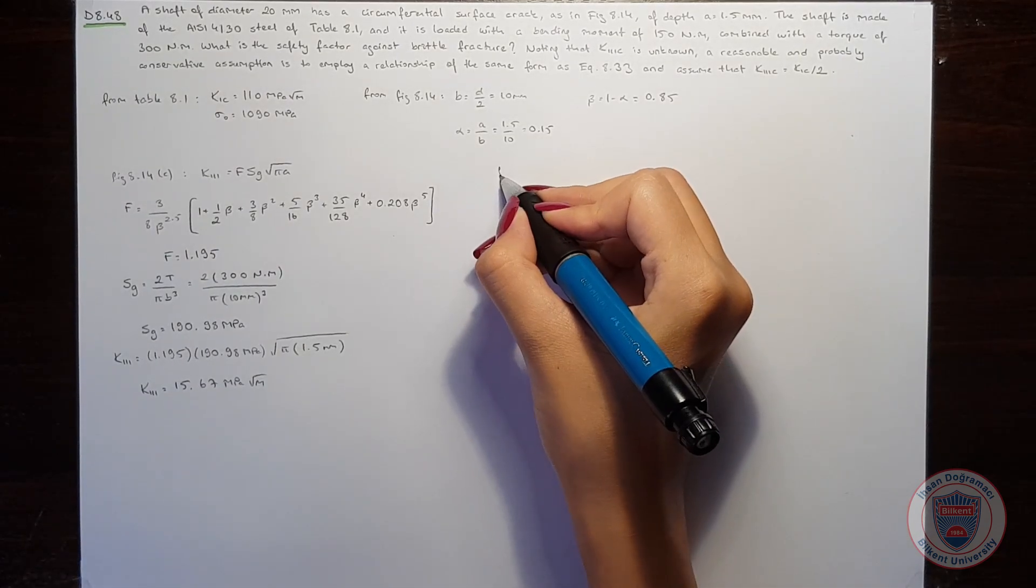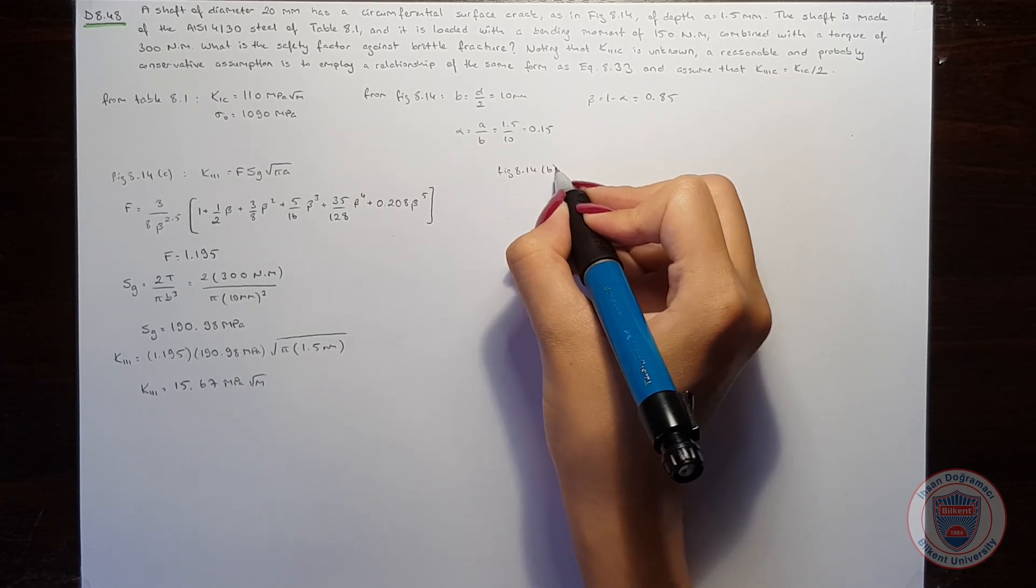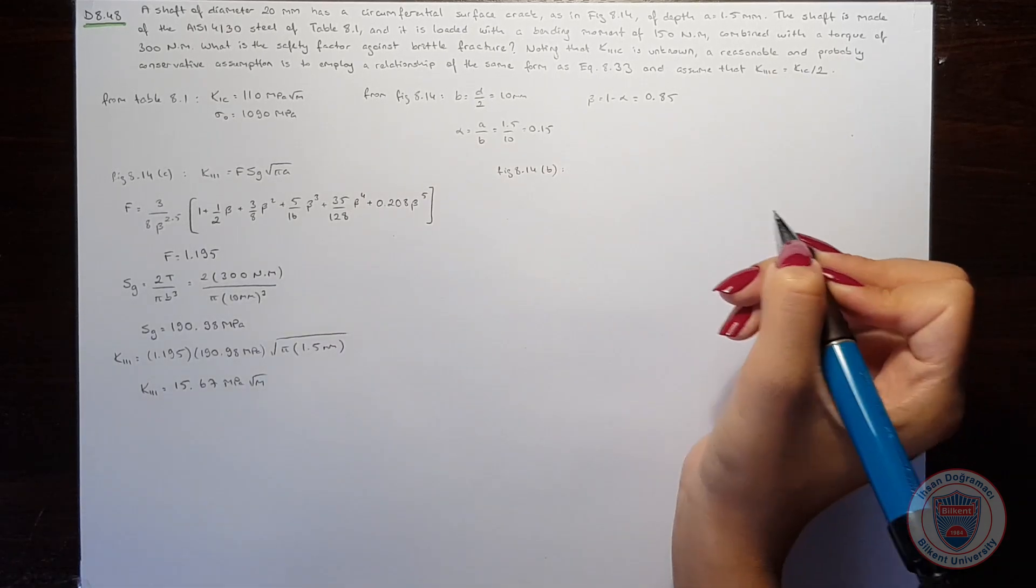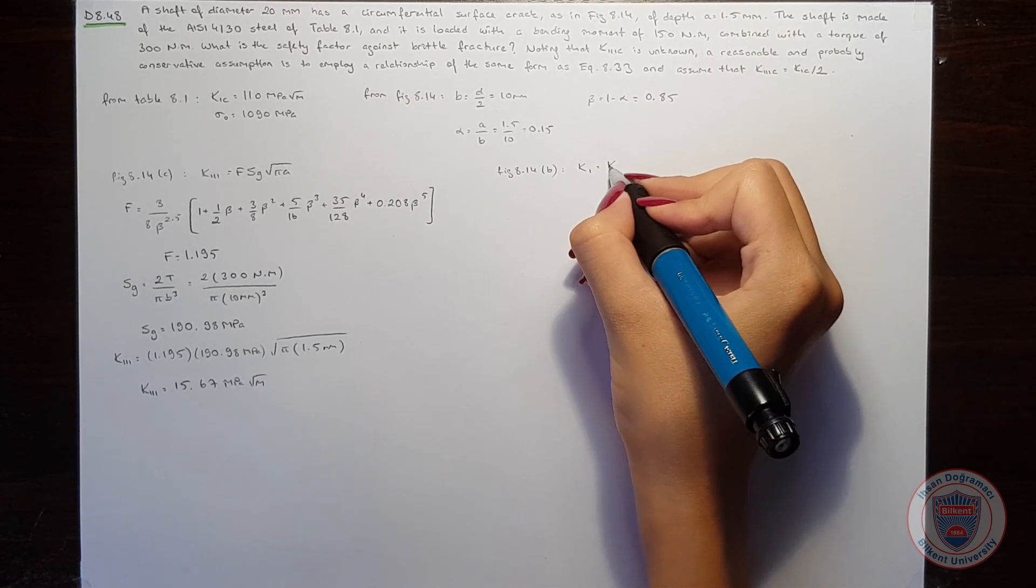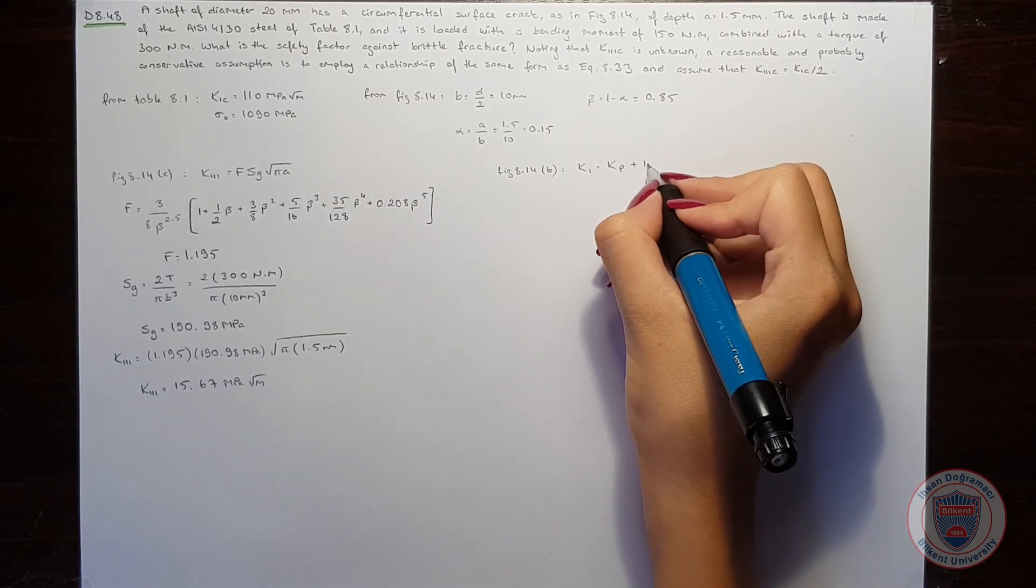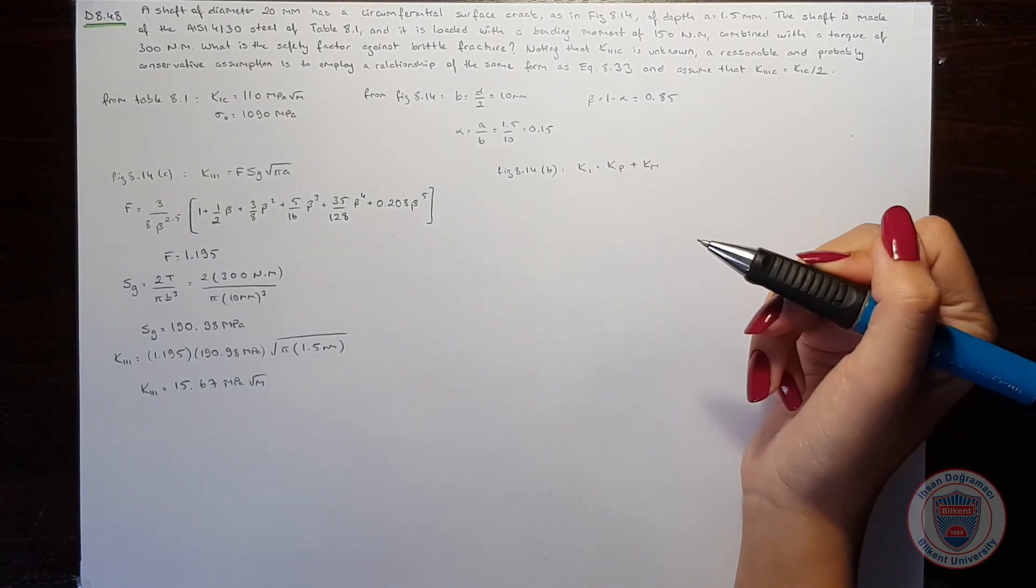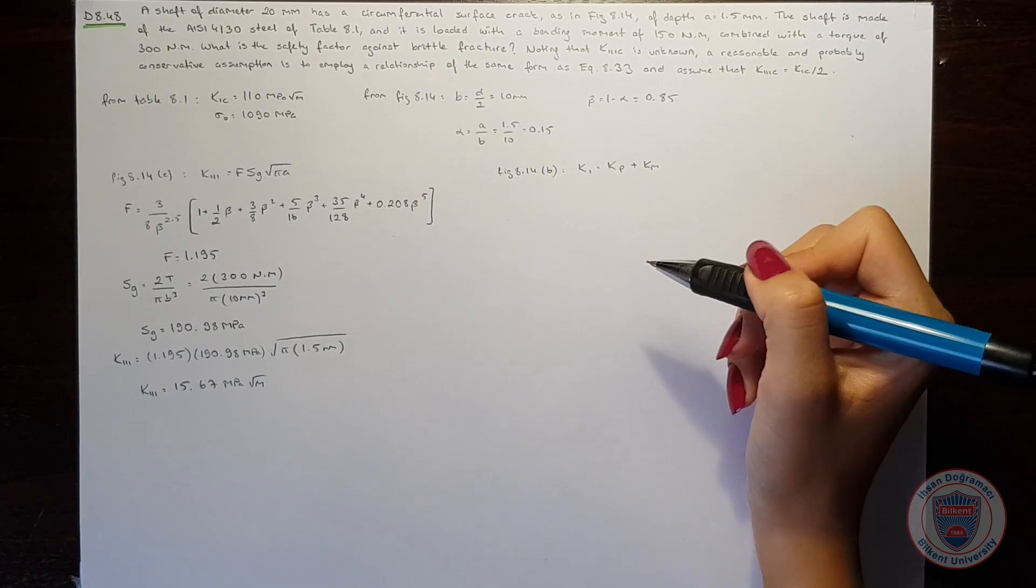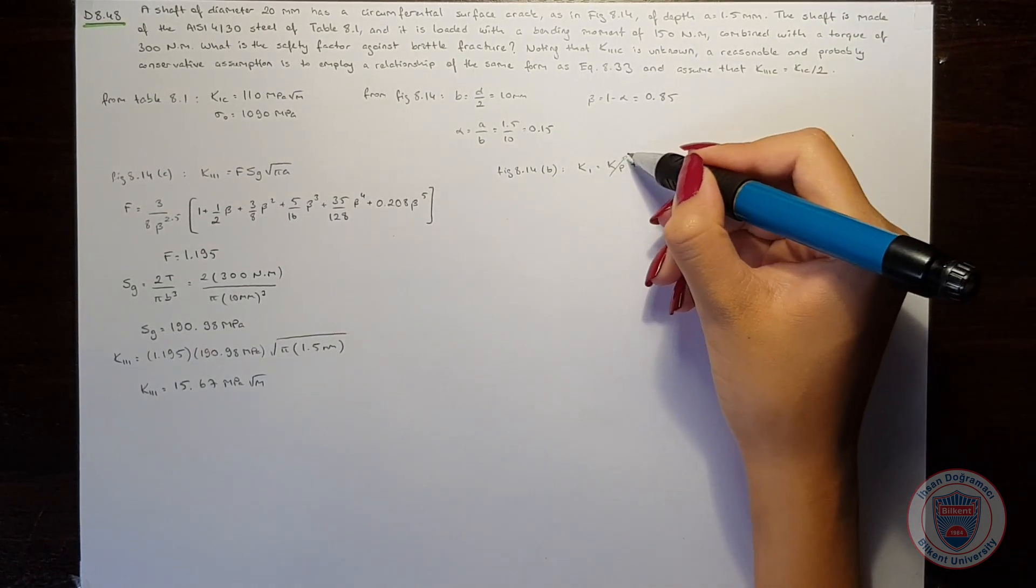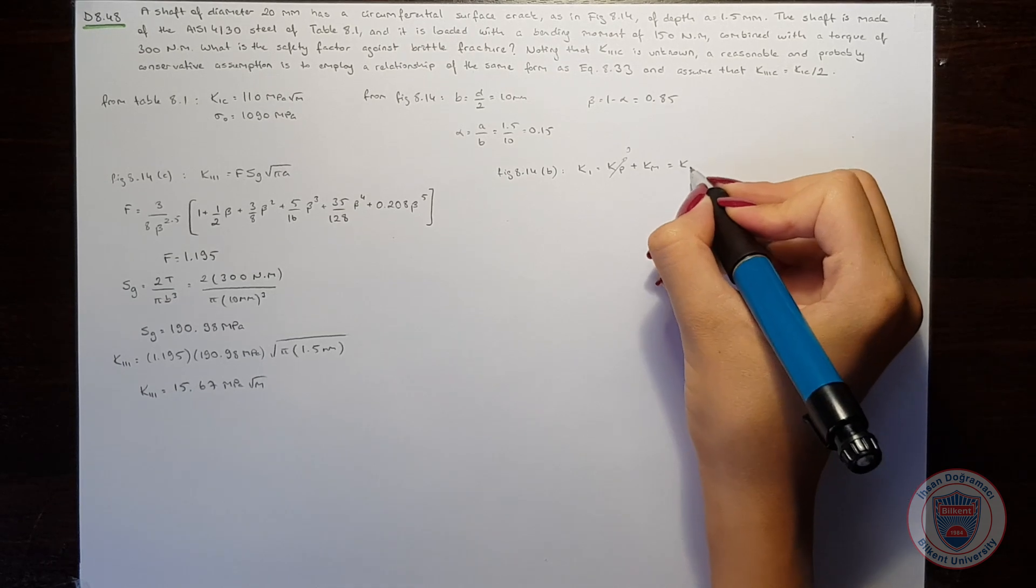This time we'll use Figure 8.14 part B. We know that K1 generally equals Kp plus Km, where Kp is the stress intensity factor for axial force and Km is for moment. Since we don't have an axial force, Kp is zero and K1 equals Km.